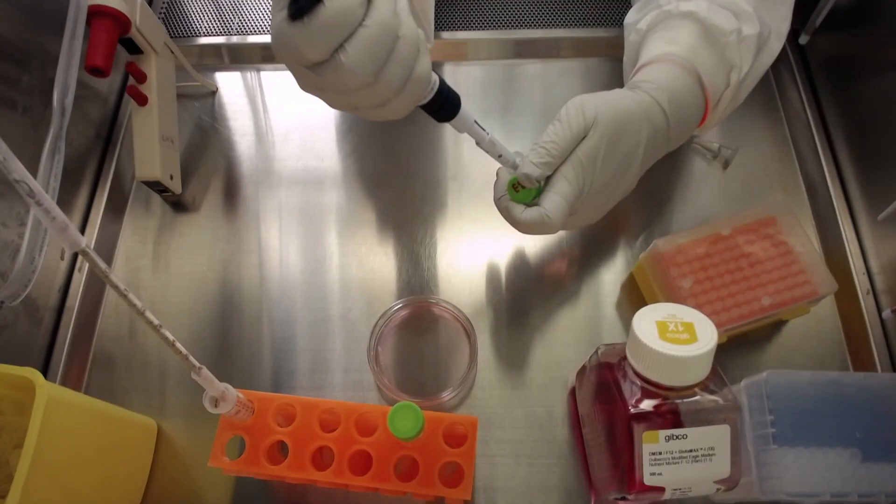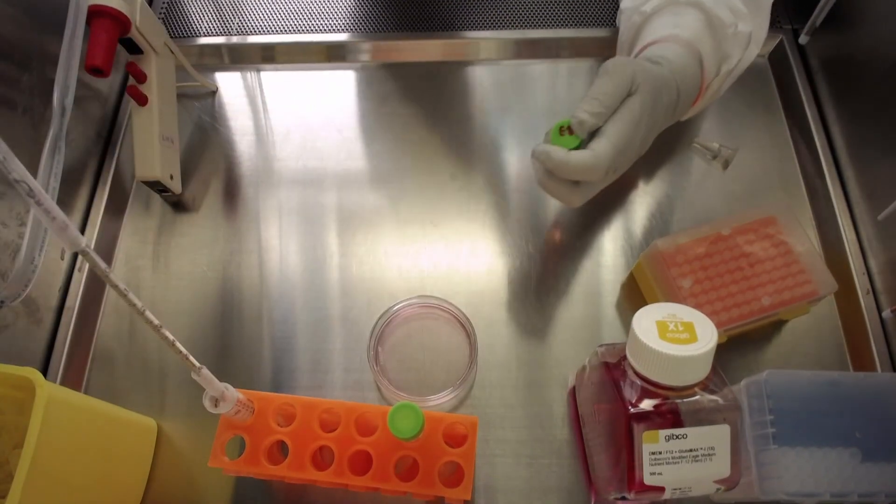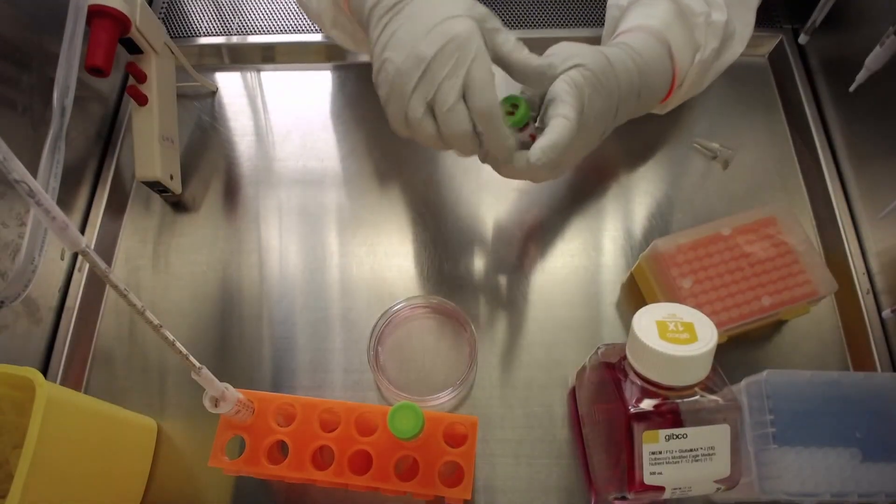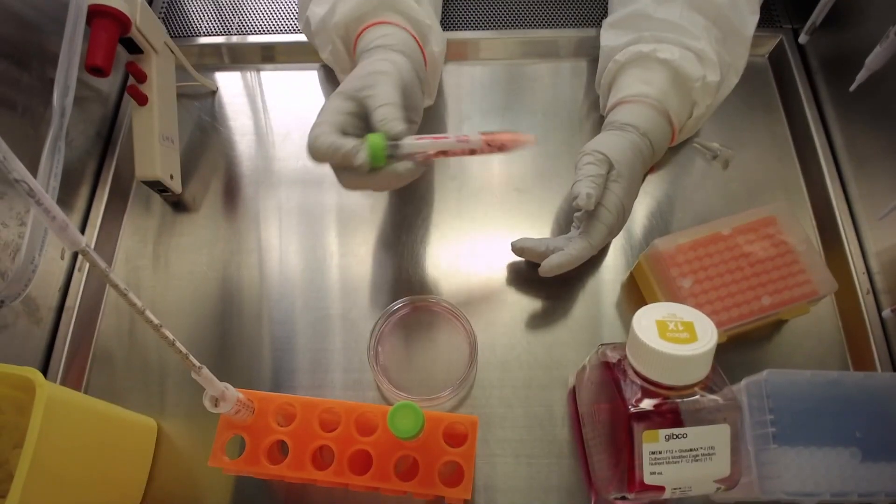Prepare 8 milliliters of the appropriate iPSC culture media supplemented with 10 micromoles of rock inhibitor. Replace the cap and invert the tube a few times to mix.